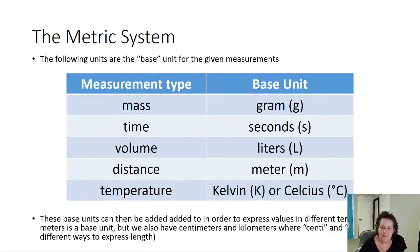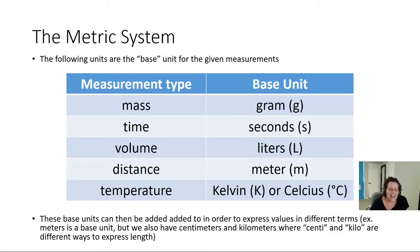These base units can then be added to in order to express values in different terms. For example, meters is the base unit for distance, but we also have things like centimeters and kilometers, where the centi and the kilo are different ways to express that same length. These are all different types of units, and we need to be able to convert between them.